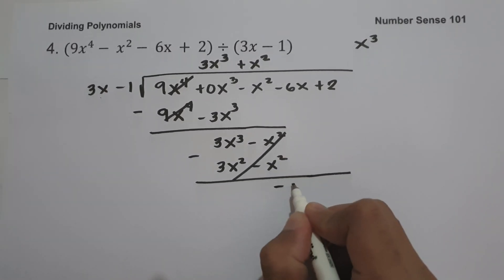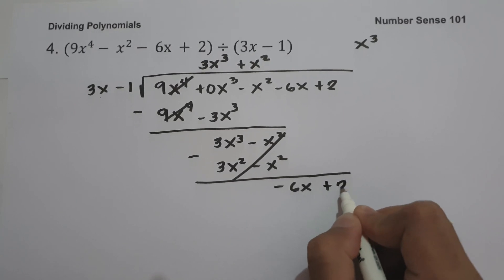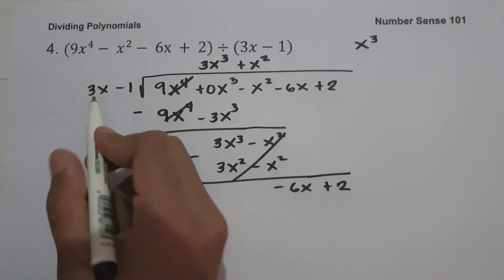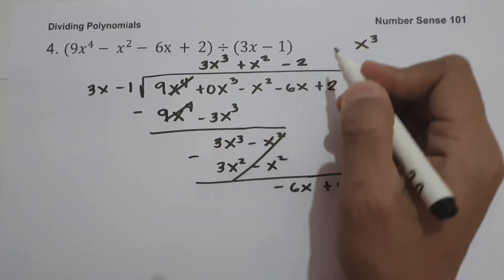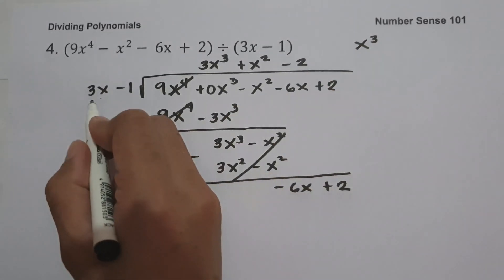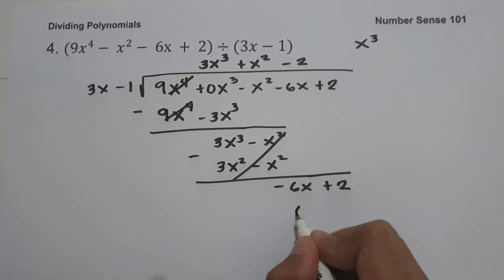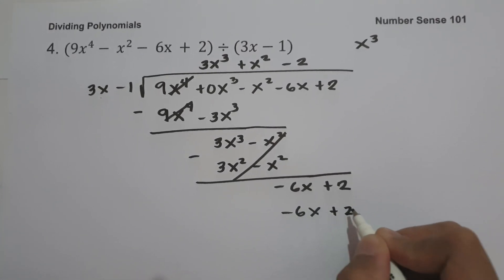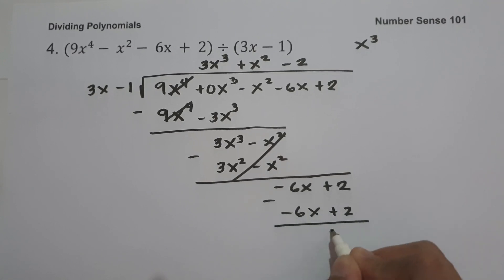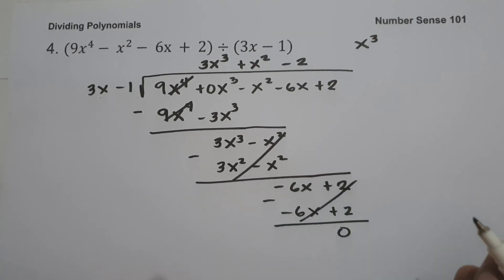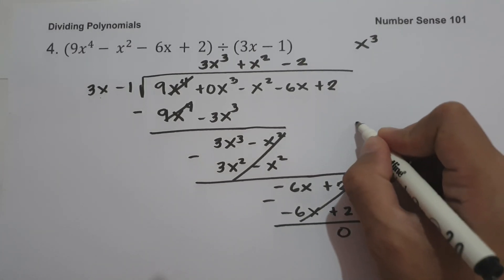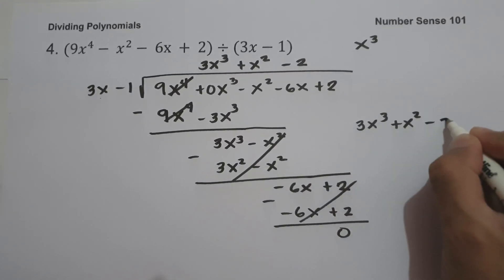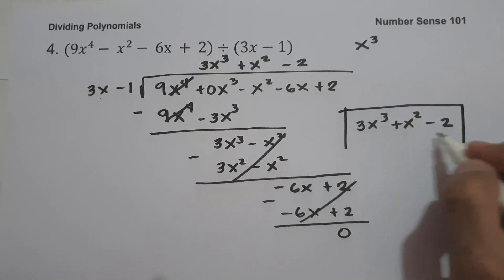Let us bring down negative 6x plus 2. Then negative 6x divided by 3x is negative 2. Negative 2 multiplied by 3x minus 1 gives us negative 6x plus 2. If we subtract this, we get 0. So therefore our answer is 3x cubed plus x squared minus 2. And this will be our answer.